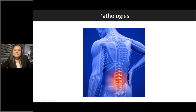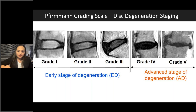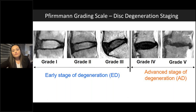Now we'll discuss the Furman grading scale for spine pathologies. The original scale from 2001 had five stages, but it was modified in 2007 to go up to grade eight. Early degeneration spans grades one through three with progressive loss of water content. Starting at grade four, advanced degeneration includes loss of disc height and modic changes. Most regenerative or intradiscal therapies are indicated starting at grade three of the Furman grading scale.